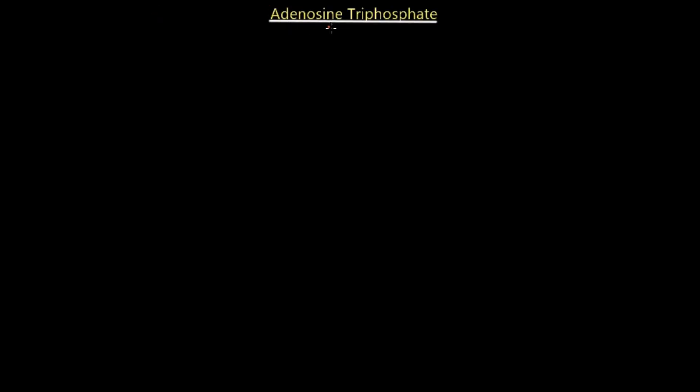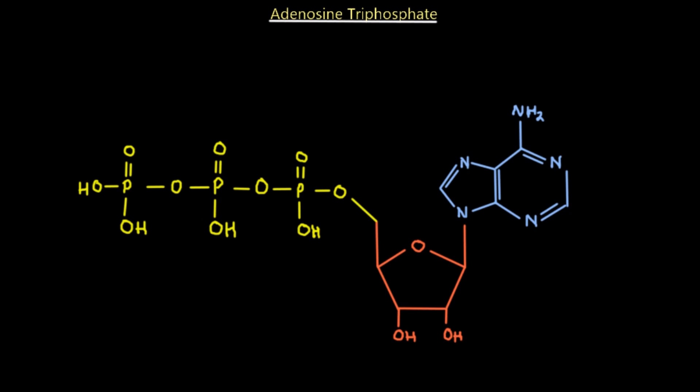ATP stands for adenosine triphosphate — it has the adenosine group and three phosphates attached to it. We're going to take a look at exactly the structure of it, but before we do that we must recognize that ATP is an energy carrier because of the rich energy bonds that it has. Let's look at the chemistry of ATP and figure out exactly why ATP is able to carry so much energy.